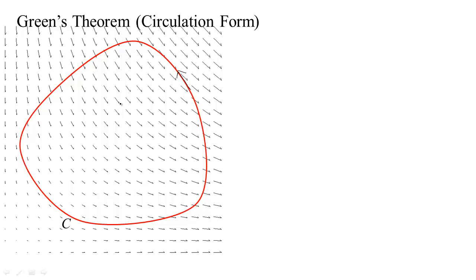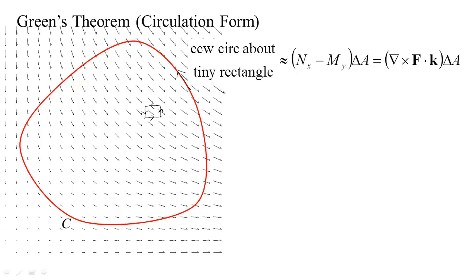Remember, there were just two ideas to Green's theorem. The first idea is that if you have a tiny patch — like a rectangle — and you find the counterclockwise circulation around that tiny rectangle, it turns out to be n_x minus m_y times the area of that tiny patch, assuming your vector field has components m and n. We call this the circulation density, because it's what you multiply by the area to get the circulation. This approximation gets better and better as you make smaller and smaller sub-rectangles.